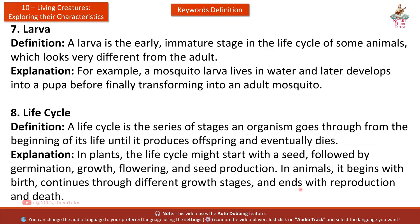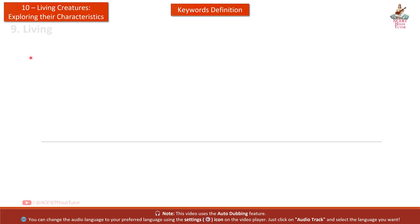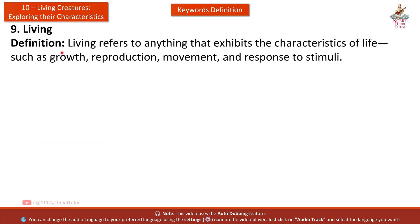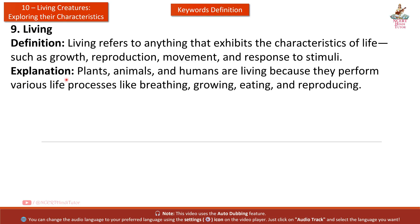Ninth: Living. Definition: Living refers to anything that exhibits the characteristics of life, such as growth, reproduction, movement, and response to stimuli. Explanation: Plants, animals, and humans are living because they perform various life processes like breathing, growing, eating, and reproducing.